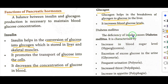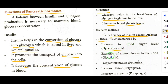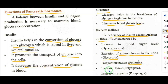The deficiency of insulin causes diabetes mellitus. The symptoms are: first, increase in blood sugar level — that is hyperglycemia; second, excretion of excess glucose in the urine — glycosuria; third, frequent urination — polyuria; fourth, increased thirst — polydipsia; and fifth, increase in appetite — polyphagia.